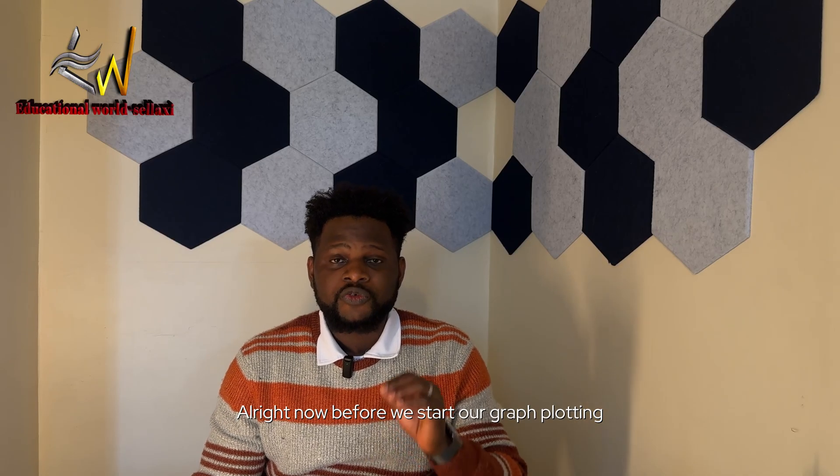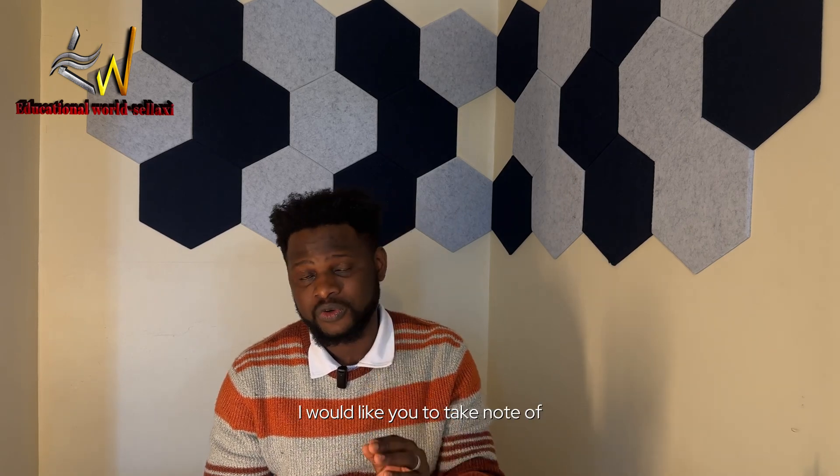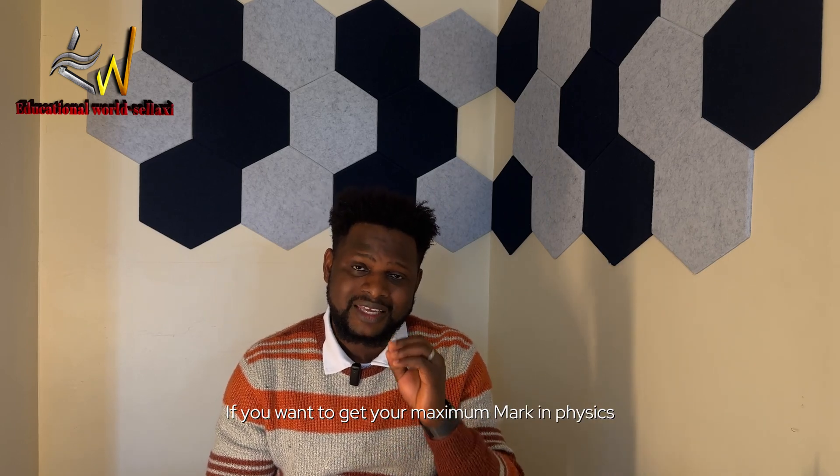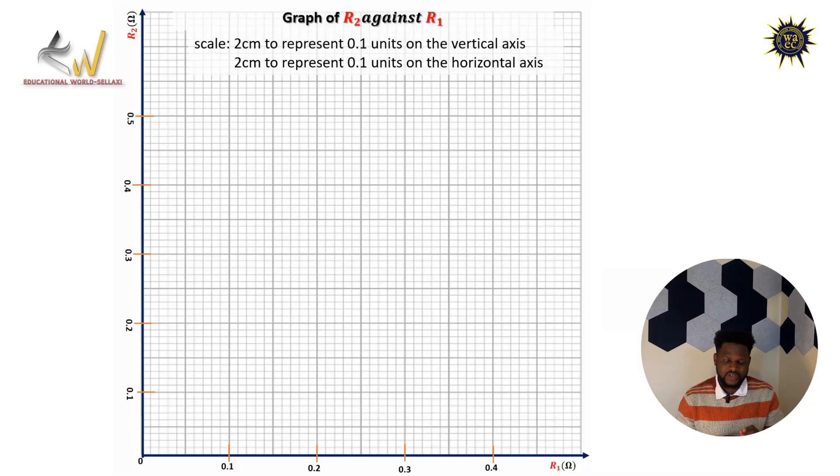Now before we start our graph plotting, there are a few things I would like you to take note of when it comes to graph plotting. These are very important if you want to get your maximum mark in physics practical. So the first thing you have to take note of is the title of the graph. The title of the graph is very important. In this case, the title of this graph is, this is a graph of R2 against R1. Put the title of the graph, very important.